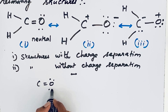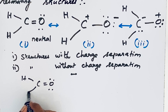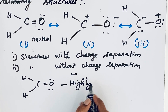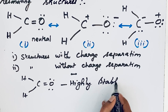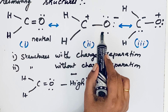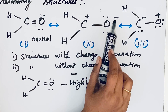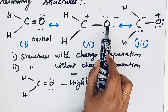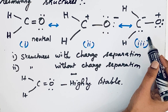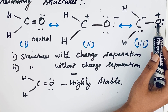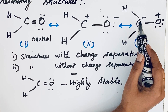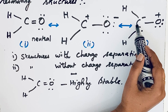Structure one with the double bond to oxygen is the highly stable structure. Now, looking at structures two and three: in structure two, the negative charge is present on the highly electronegative atom and the positive charge is on the less electronegative atom. In structure three, the positive charge is on the highly electronegative atom and the negative charge is on the less electronegative atom.